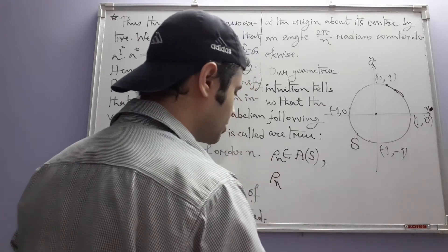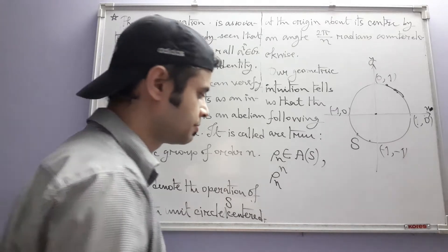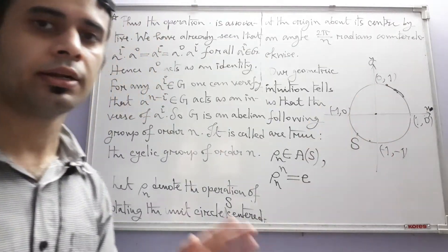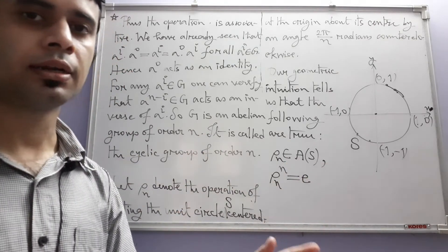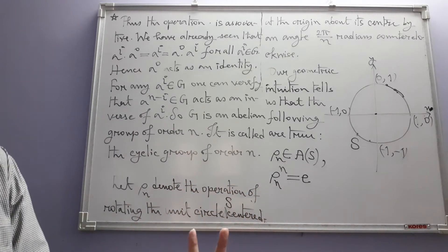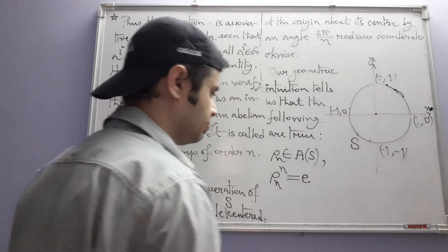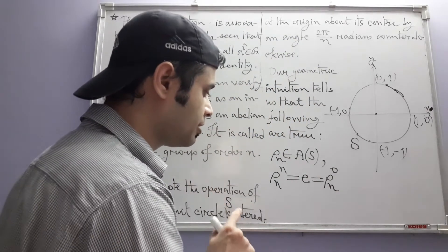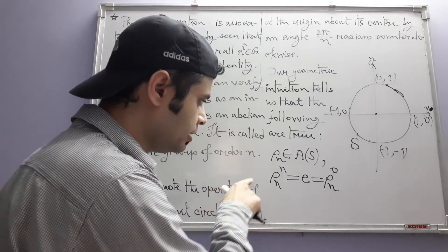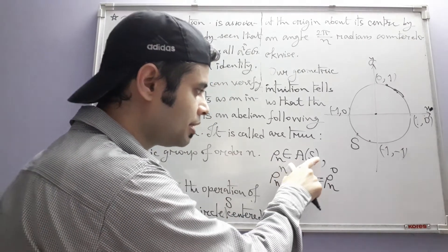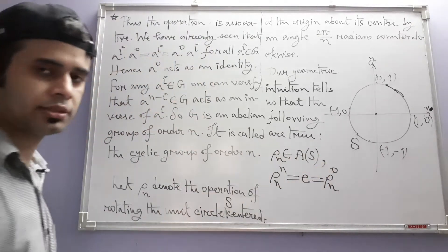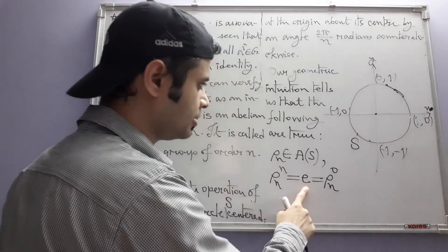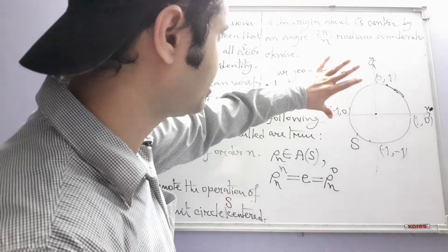Second, if we perform ρₙ n times, that equals the identity. The identity mapping in the context of this circle is doing nothing — rotating by an angle of zero radians keeps every point to itself. Now, ρₙ to the power n by definition equals identity, and this we also find from geometric intuition.